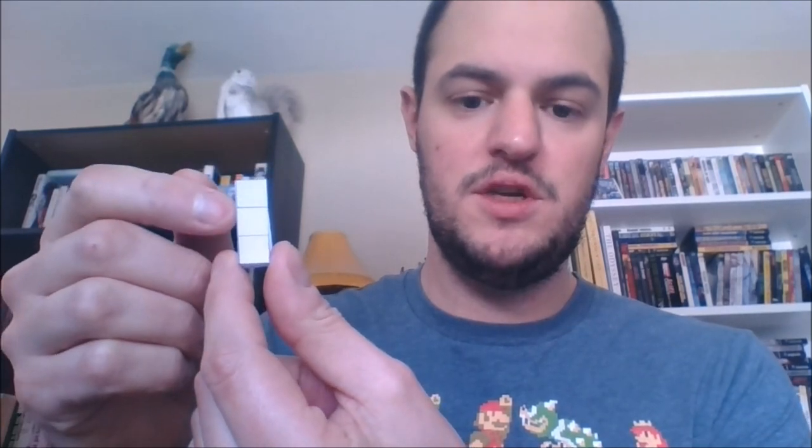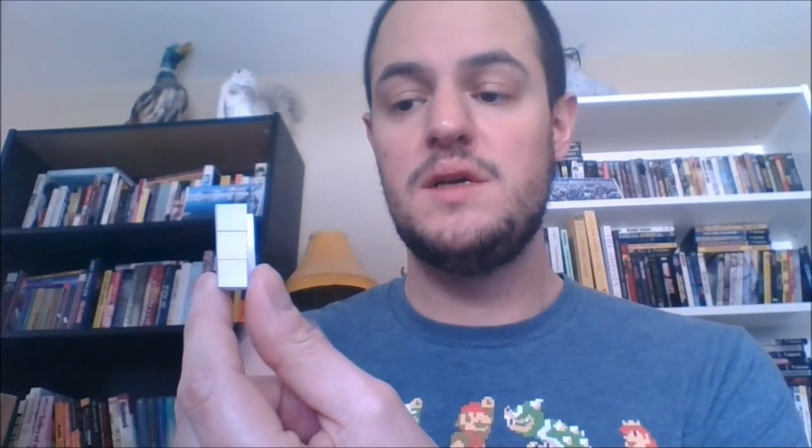But every time we add another centimeter to the height, see the lines on there? Well, we could fit one cube, then two cubes, then three cubes. So to put this all together, to find volume, we need to take the area of the bottom, length times width, and then multiply it by the height. Area of the bottom times how many layers that area is stacked. So let's take an example of that on the smart board.